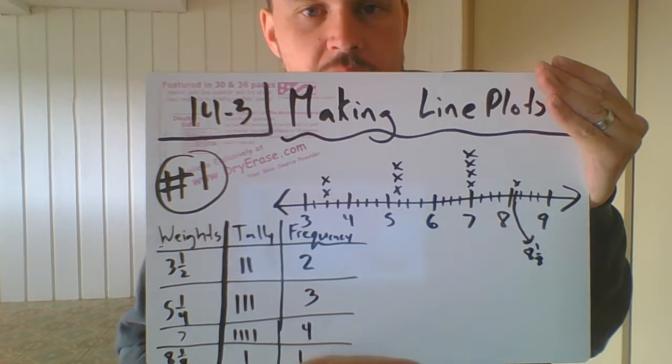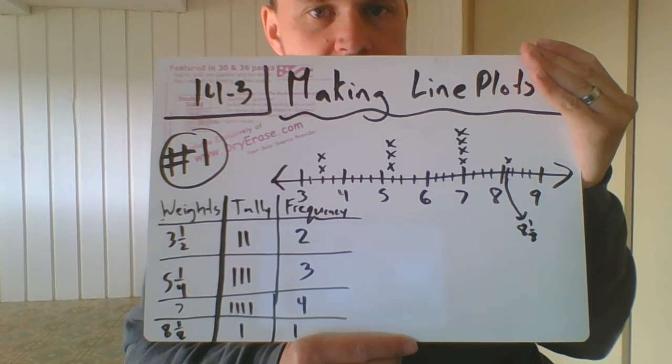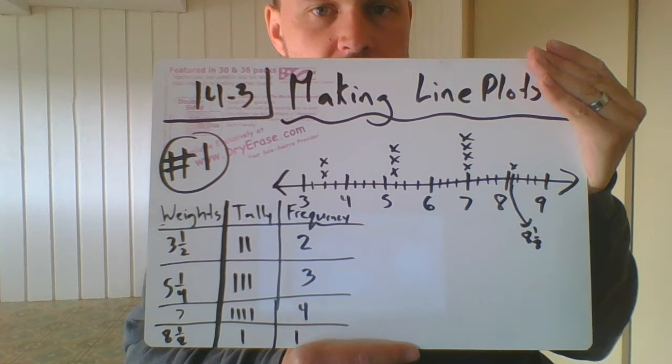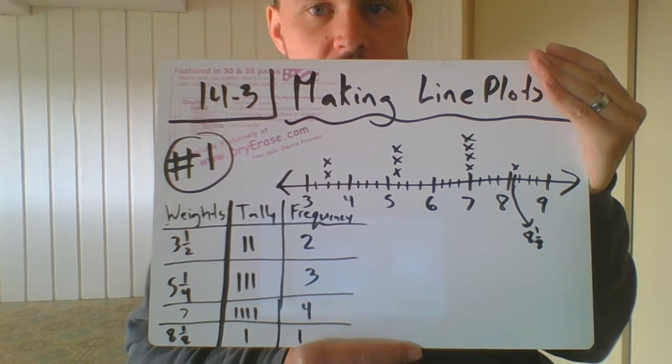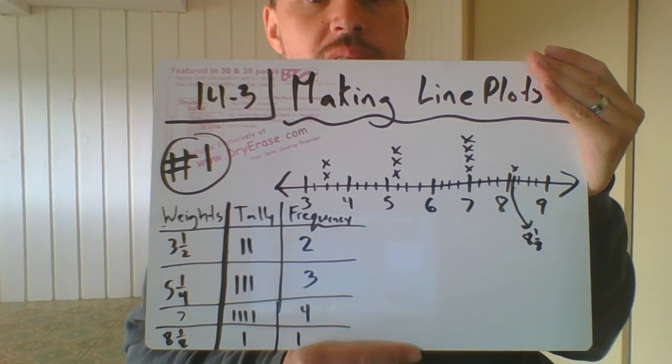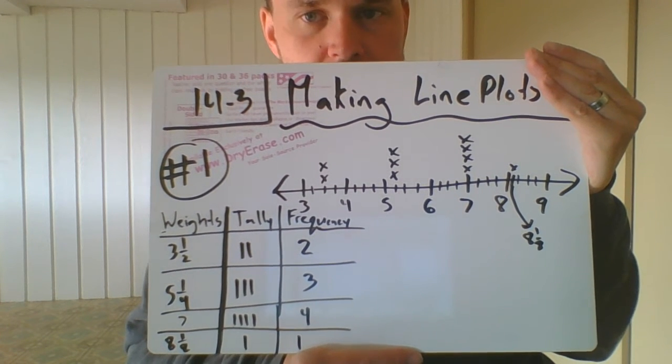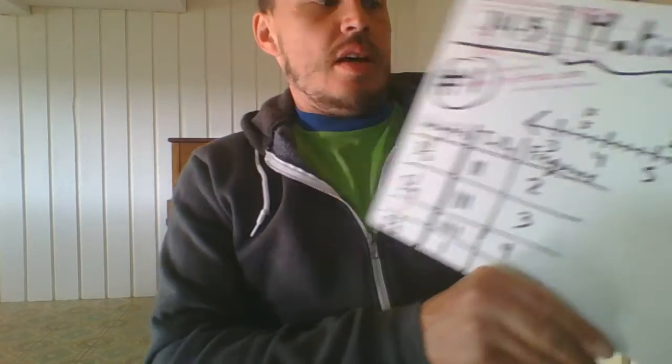Okay, so what I did with this line plot is I put X's where all the tallies are. So three and a half gets two tallies. I mark that above that fraction apart. For five and a fourth, I put three above what would be five and a fourth. Directly above seven, because seven's a whole number, I put four marks. And then between eight and what would have been eight and a fourth, I put an X just between the lines.